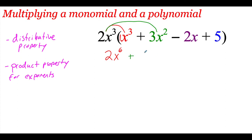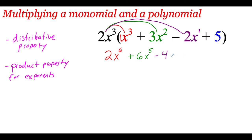Now I want to distribute the 2x cubed to the 3x squared. So 2 times 3 is 6. x cubed times x squared — I add those exponents together, so I get x to the 5th. Then if I take the 2x cubed and multiply it over to the negative 2x, 2 times negative 2 is negative 4. And then x cubed times x to the 1st power, I get x to the 4th power.